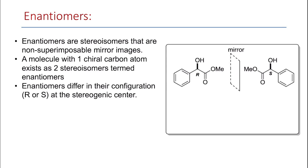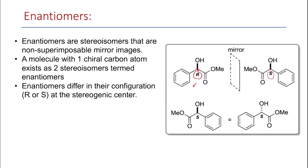So if we have a chiral molecule like this one, it has one chiral center. The first one is R configuration and the second one is S configuration. These two are mirror images of each other and they are not superimposable — they are called enantiomers.